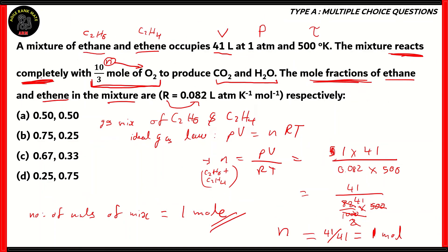So among the options, the correct one is option C: 0.67 and 0.33. The first value is for ethane and the second value is for ethene, because the question uses the word 'respectively,' which provides the order. Options A, B, and D are incorrect, as the calculated values do not match those options. C is the only correct option.